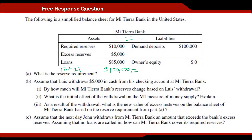We've got demand deposits — just in case you forgot, I know that's a tricky sounding term — demand deposit just means checking account. Demand deposits equals one hundred thousand, owner's equity is zero, so one hundred thousand plus zero equals one hundred thousand. Our balance sheet balances. Everything is all good.